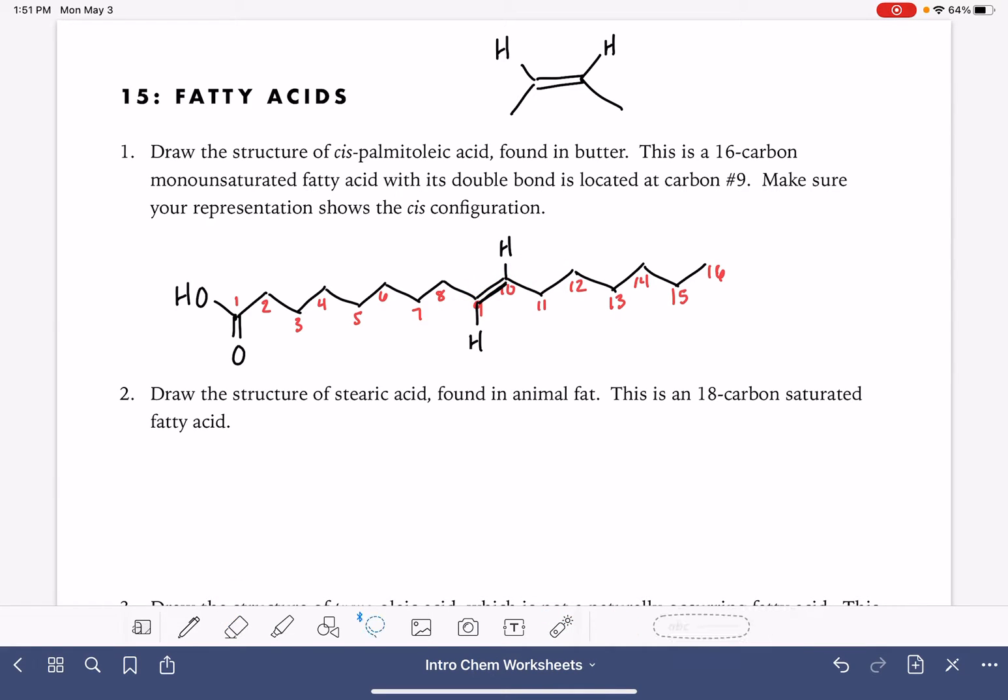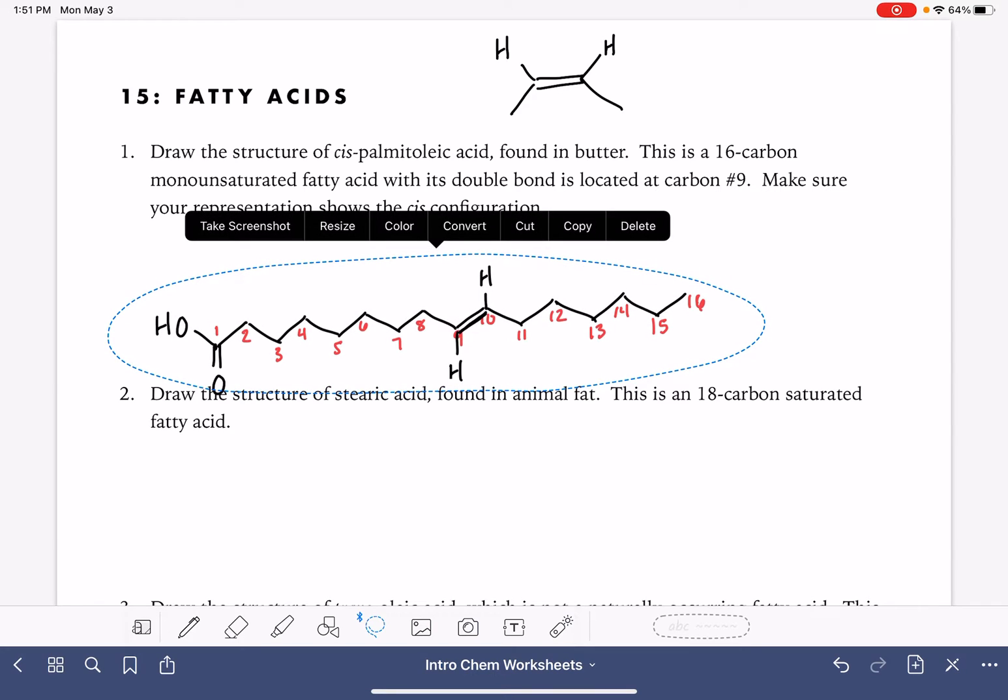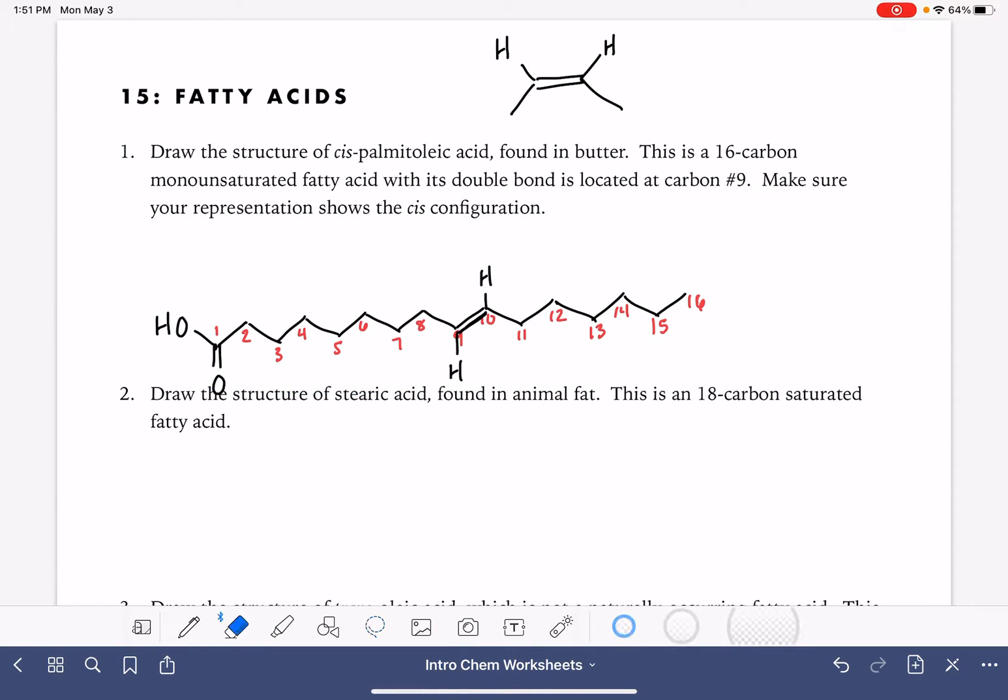So I am going to just move this down a little bit and I'm going to erase carbons 11 through 16 and also that hydrogen atom. And I'm going to redraw. Here's my carbon number 11. I'm going to draw that hydrogen in on there, and then I'm going to go back to my carbons: 12, 13, 14, 15, 16.